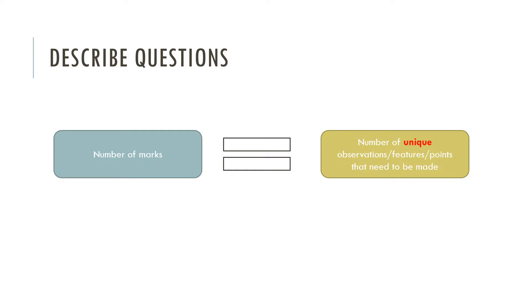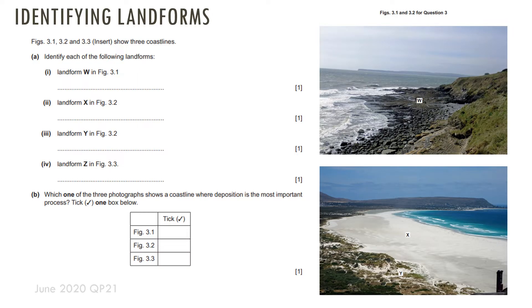Remember, all of these photograph interpretation questions are describe questions. So the number of marks refers to the number of unique observations, features, and points that you need to make and discuss. This video helps you to identify as many possible observations as you can make.